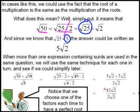That whole thing just simply becomes 5 times square root 2. And that's what we'll be working with, an expression containing integers and root signs or surds. Now when more than one expression containing surds are used in the same question, we will use the same technique for each one in turn.